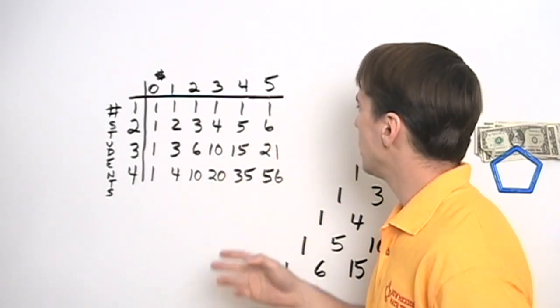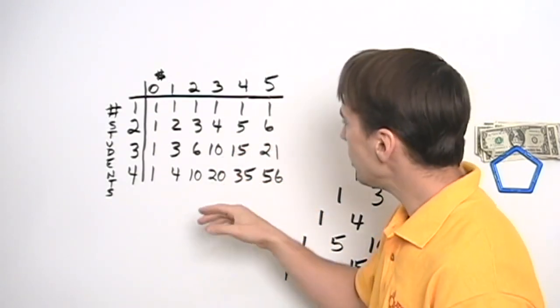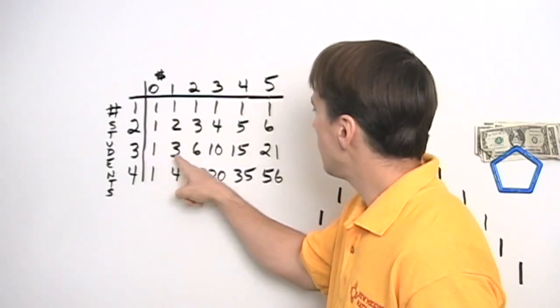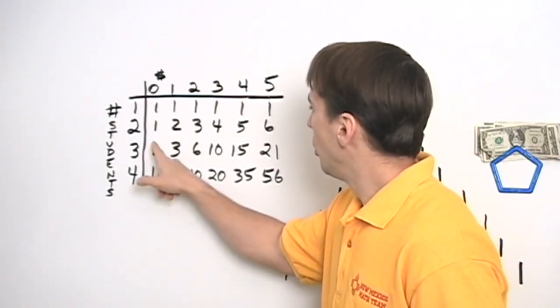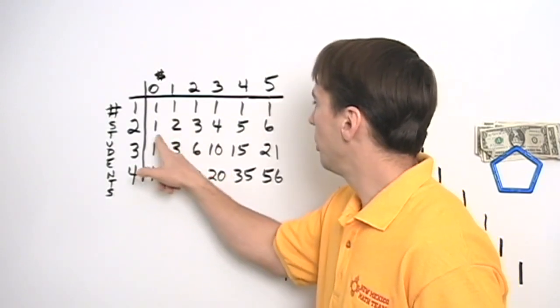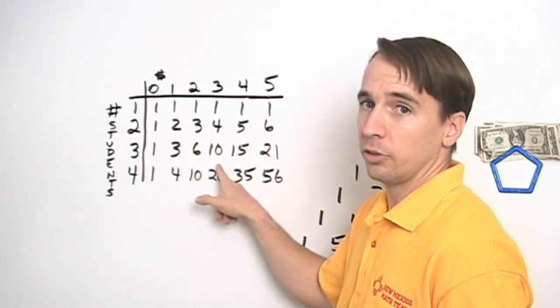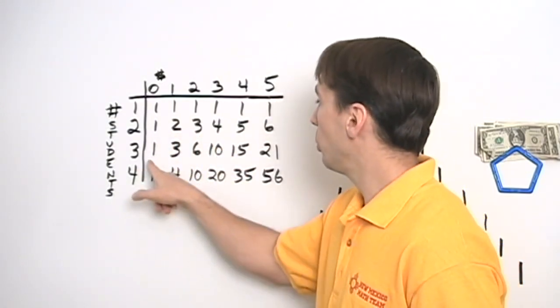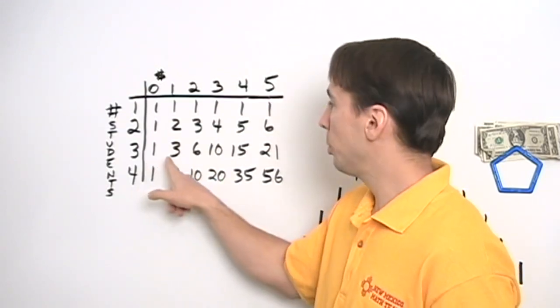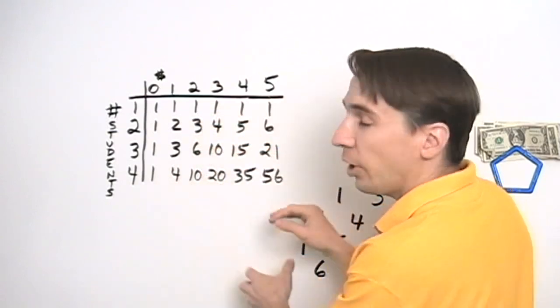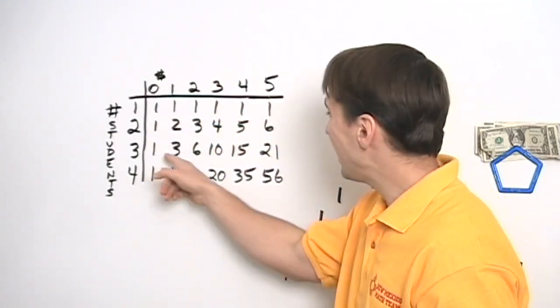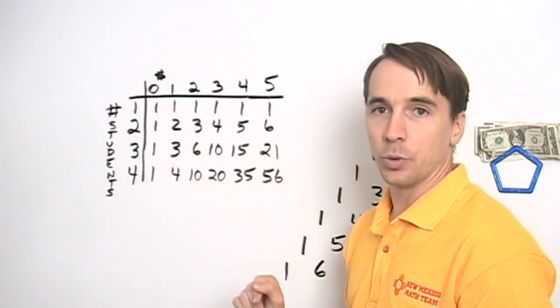Well how do we get the numbers in this grid? We worked out a few cases, but then we saw that we could add the numbers in each row to get the numbers in the next row. For example, 1 plus 2 plus 3 is 6. 1 plus 2 plus 3 plus 4 is 10. 1 plus 3 is 4. 1 plus 3 plus 6 is 10. 1 plus 3 plus 6 plus 10 is 20. And so on. We can build the whole table just by adding up each row to get the next row.